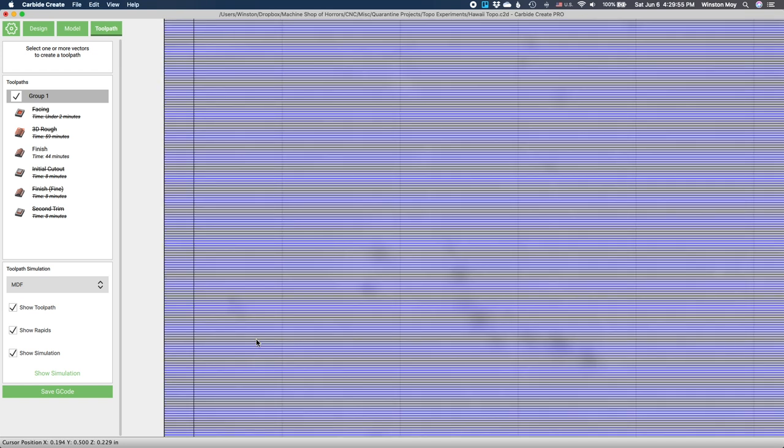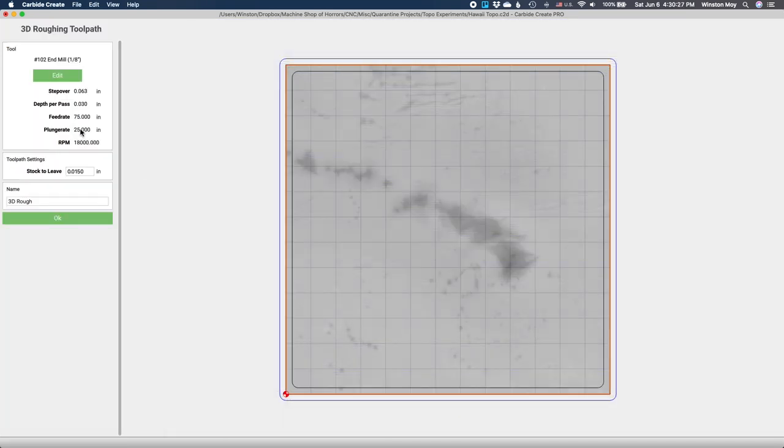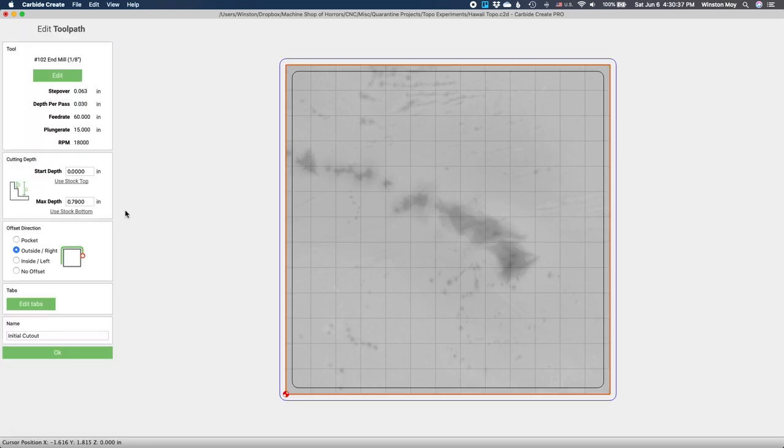I know that walnut machines really nicely and easily, so I made my toolpaths about 20% faster than the default feeds and speeds in Carbide Create for hardwood. I also programmed in a contour toolpath to cut out my tile from the rest of my stock.